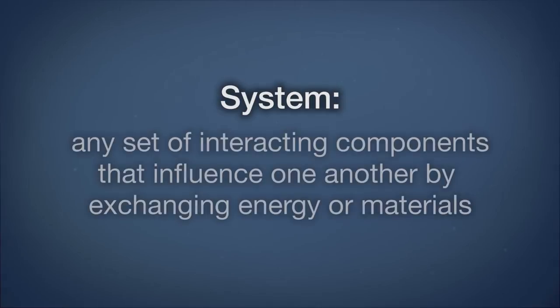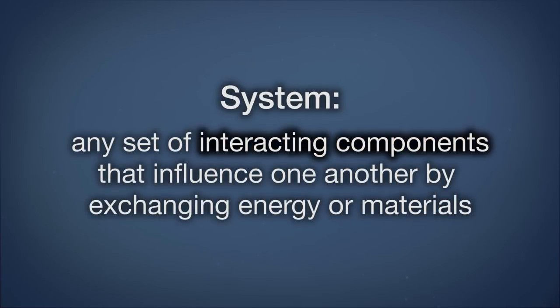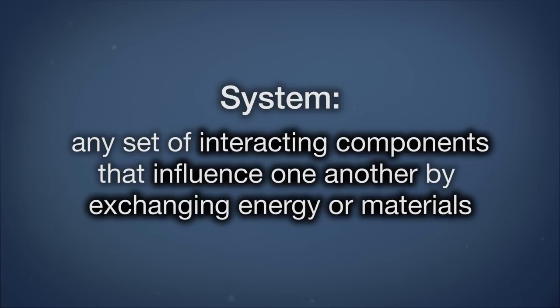A system is any set of interacting components that influence one another by exchanging energy or materials. There are many important chemical reactions in environmental science. Some environmental problems can be described as a series of chemical reactions. Understanding matter and molecules is important in understanding these chemical reactions.